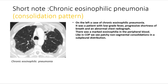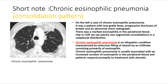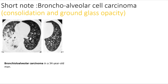A case of chronic eosinophilic pneumonia: a patient with low-grade fever, progressive shortness of breath, an abnormal chest radiograph, and marked eosinophilia in the peripheral blood. Like COP, patchy non-segmental consolidations are seen in a subpleural distribution. Chronic eosinophilic pneumonia is an idiopathic condition characterized by extensive filling of alveoli by an infiltrate consisting primarily of eosinophils, usually associated with increased peripheral blood eosinophils, and patients respond promptly to steroid treatment.